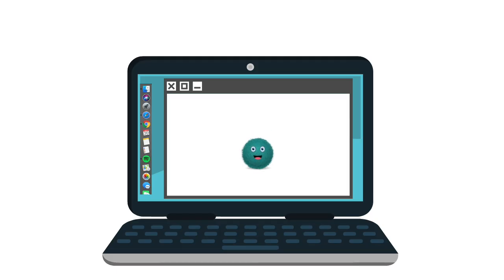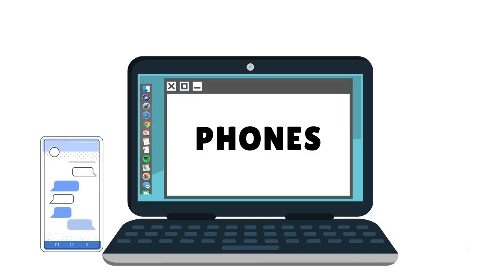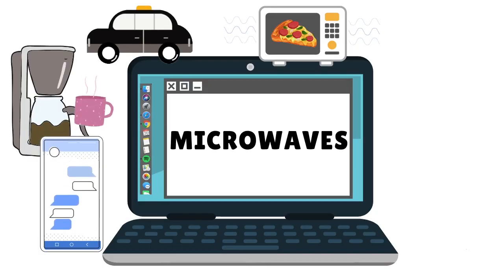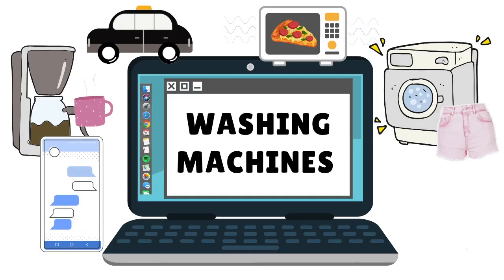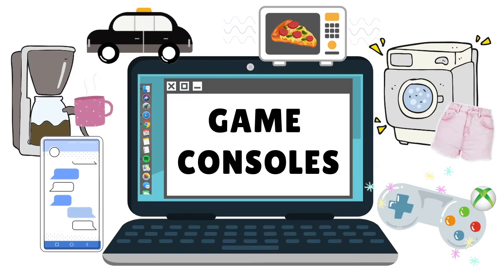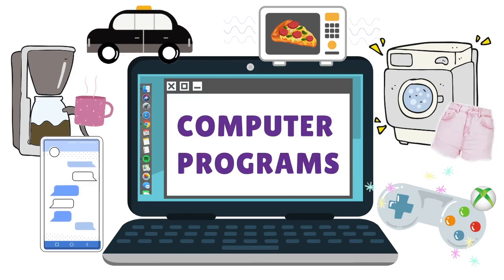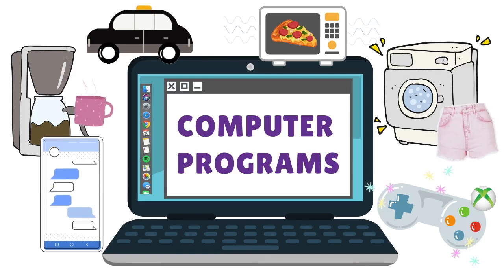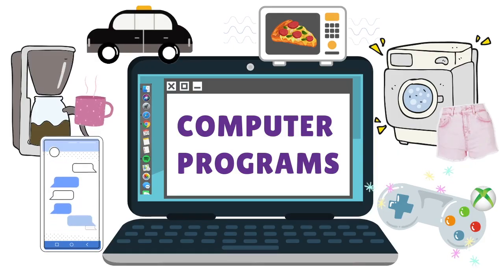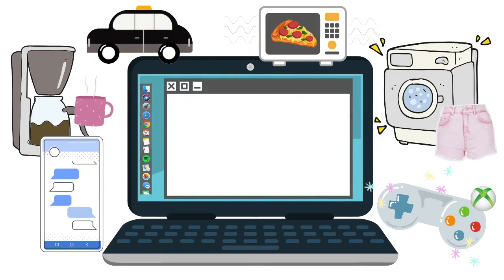You can see computer programs in action all around you. They control things like cell phones, coffee makers, cars, microwaves, washing machines, and gaming consoles. If we didn't have computer programs, these things that we use every day would not be the same. Most of them wouldn't even exist.